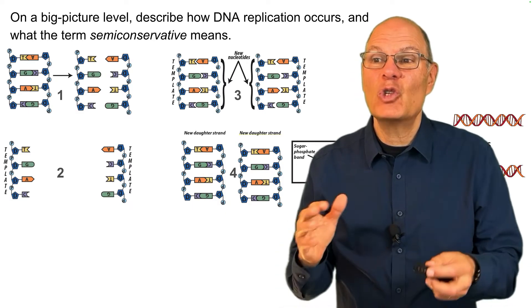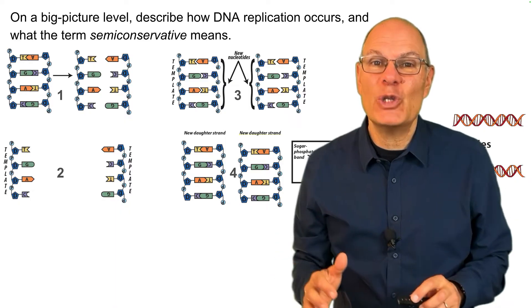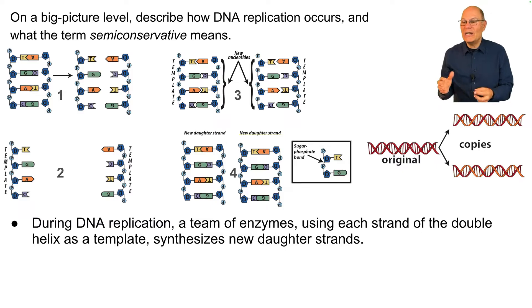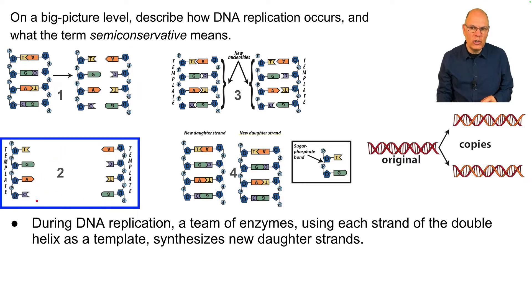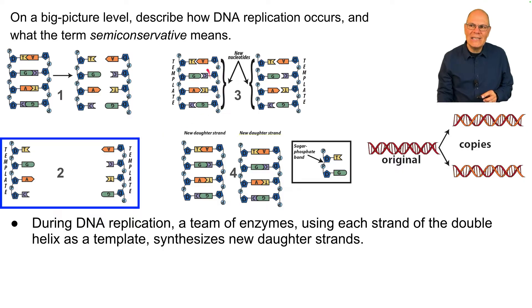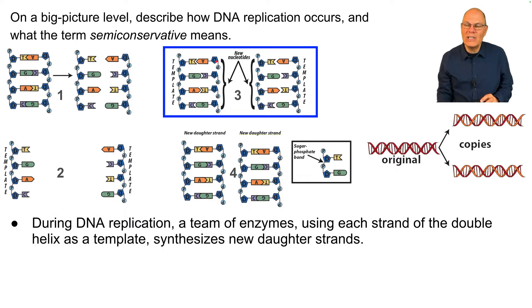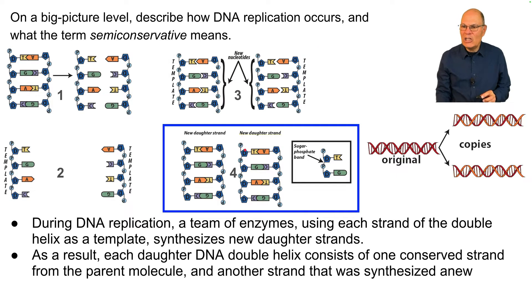On a big picture level, describe how DNA replication occurs and what the term semi-conservative means. During DNA replication, a team of enzymes uses each strand of the double helix as a template to synthesize new daughter strands. Enzymes pull the strand apart, resulting in two single strands. These single strands serve as a template, and nucleotides available in the nucleus bind with the exposed strand following base pairing rules: A will bind with T, C will bind with G. The result is that each daughter DNA double helix consists of one conserved strand from the parent molecule and another strand that was synthesized anew.